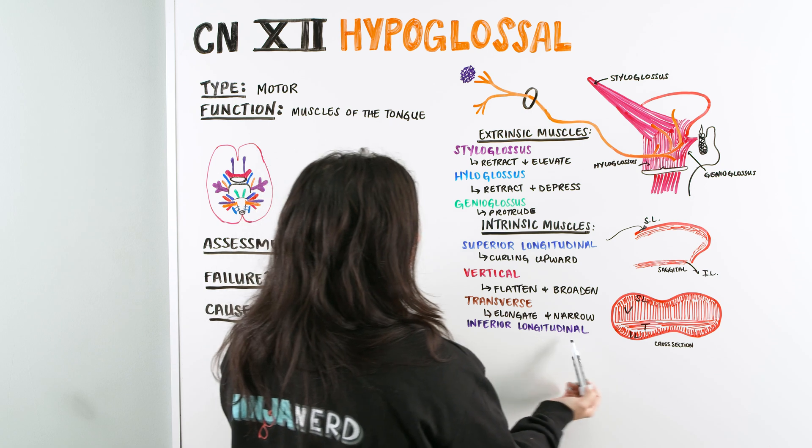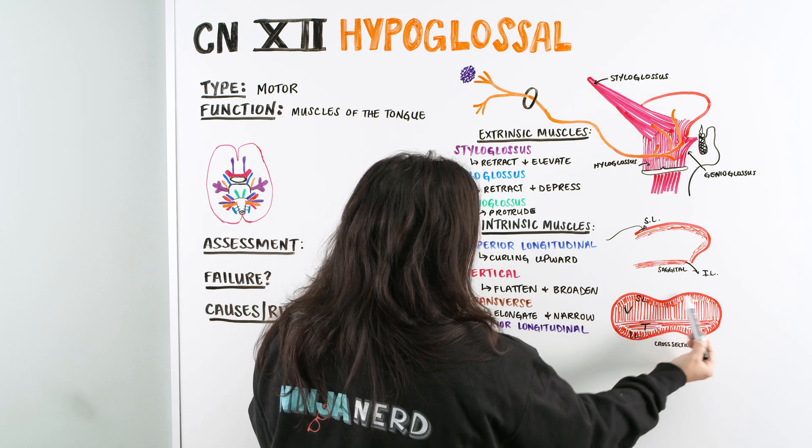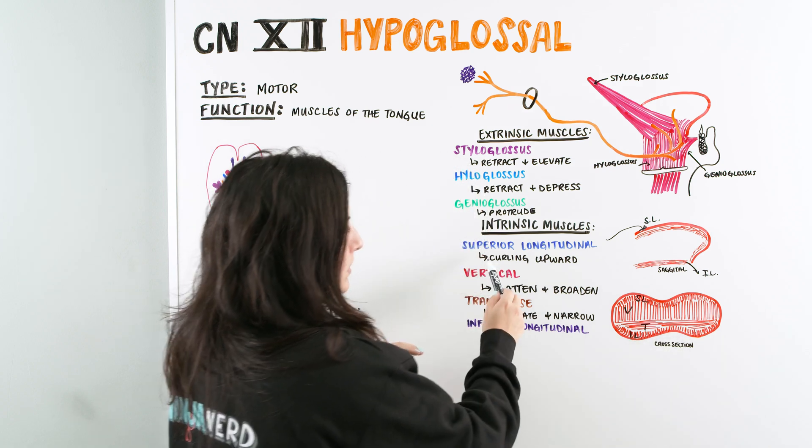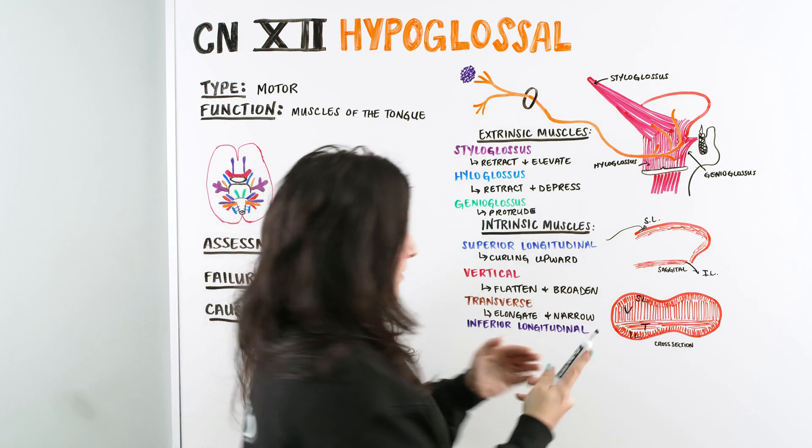And now we can see the inferior longitudinal is very similar to the superior longitudinal. Across the top is our superior. Across the bottom is our inferior. And the inferior longitudinal is going to allow it to curl, but it's going to allow it to curl downwards, okay? So down around those edges.